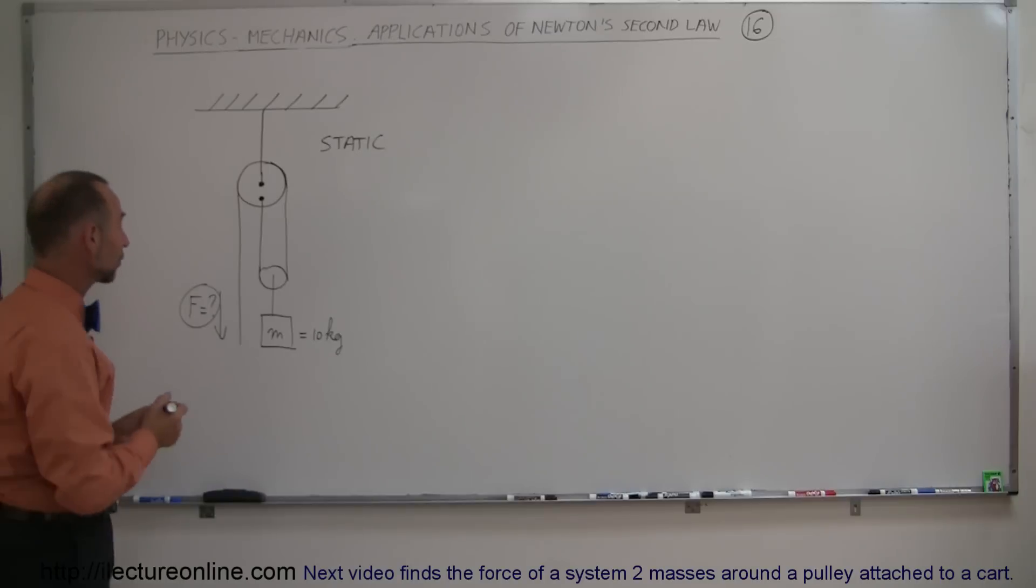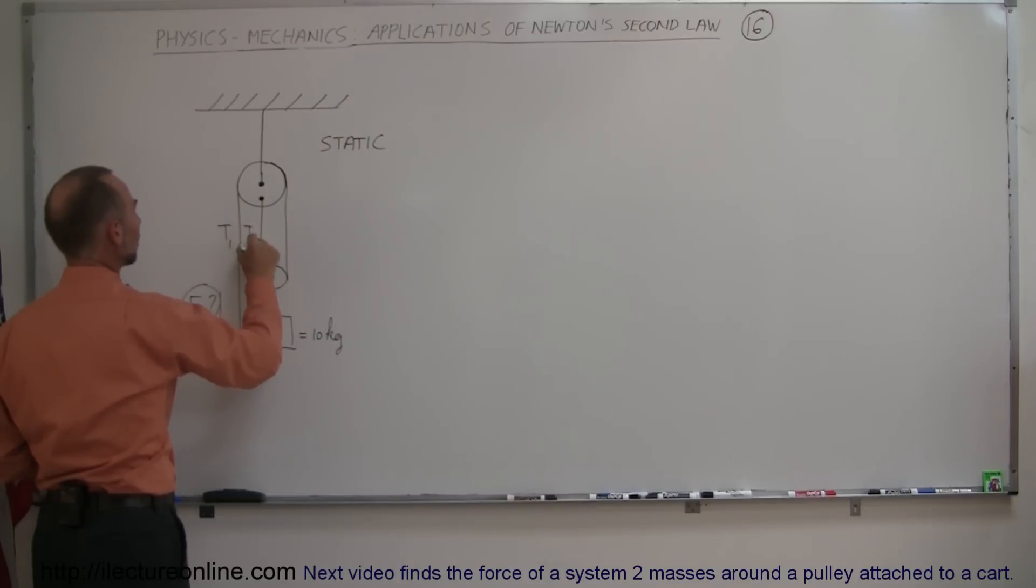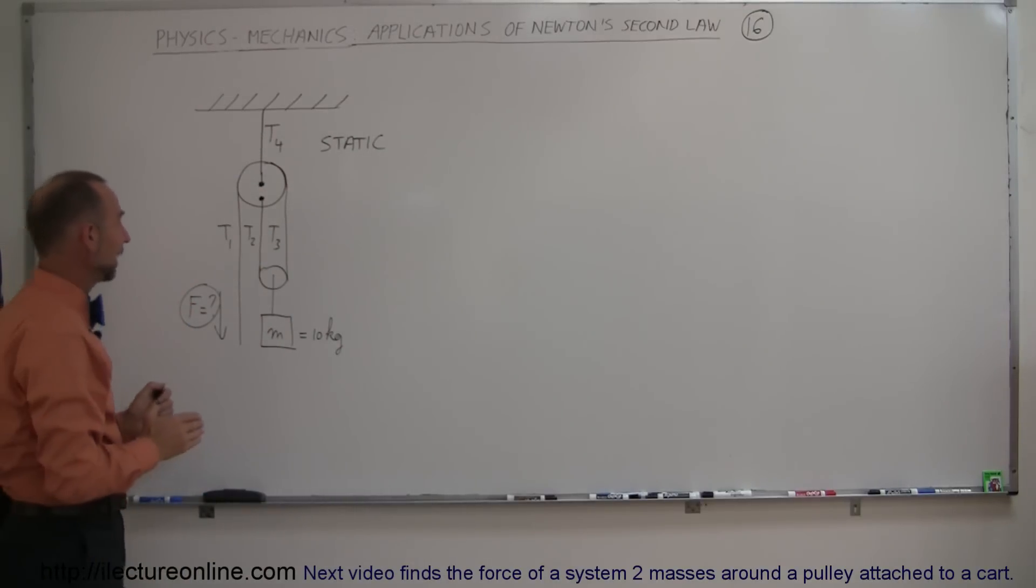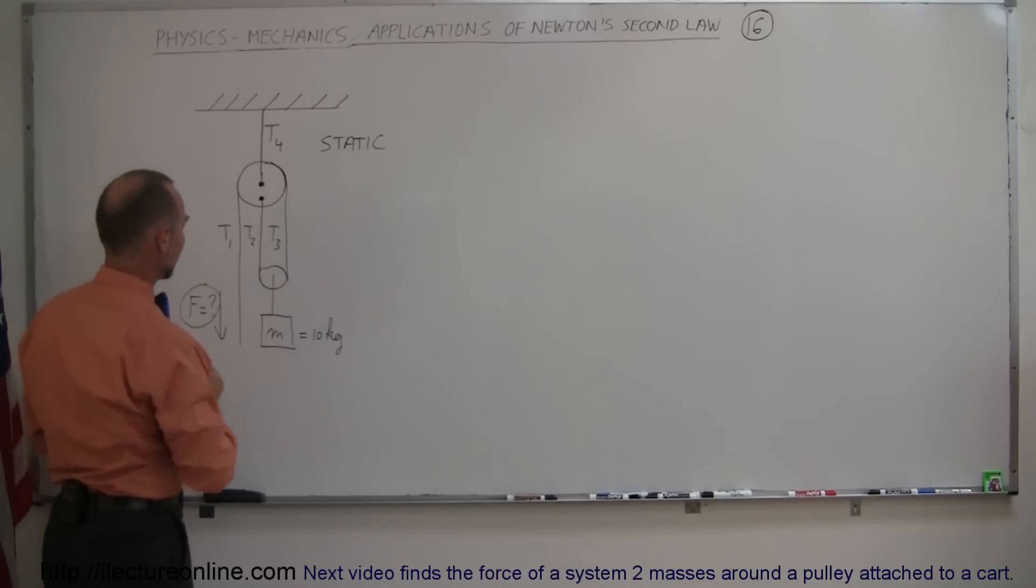Well recognizing that even though this is one single string, let's assume the tension here we'll call T1, we'll call the tension in this part of the string T2, we'll call the tension here T3, and we'll call the tension here T4. Now notice that in a system like this, and here let's call this T5. We have another string right there, T5.